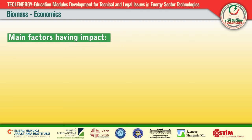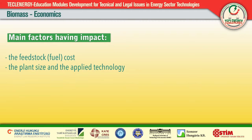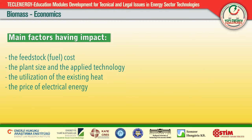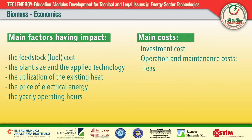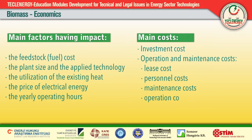The main factors having an impact on biomass systems from an economic point of view are the fuel cost, the plant size and applied technology, the utilization of existing heat, the price of electrical energy, and the yearly operating hours. The main costs are the investment cost and the operation and maintenance costs, which include lease costs, personnel costs, maintenance costs, operation costs, and fuel costs — which do exist, unlike the case of other renewables where the fuel is free.